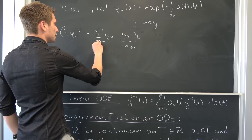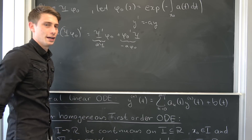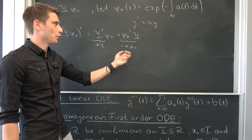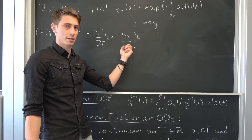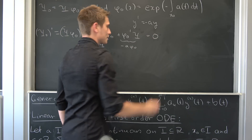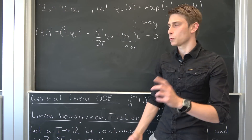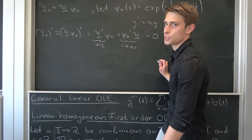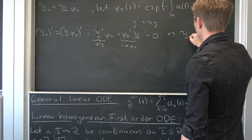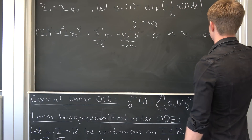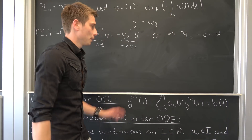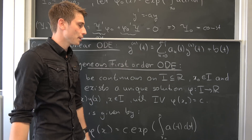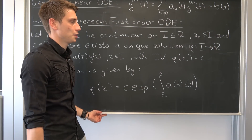So ψ' = a · ψ. That's great because on the left-hand side we have a · ψ · φ₀, and on the right-hand side we have −a · ψ · φ₀, so these cancel and ψ₀' = 0. When the derivative of a function is zero, the function itself is constant — so ψ₀ is some constant.